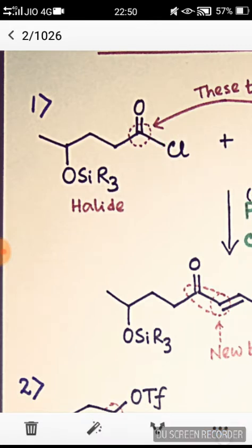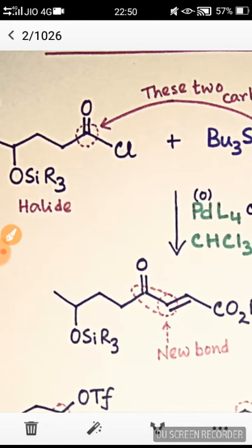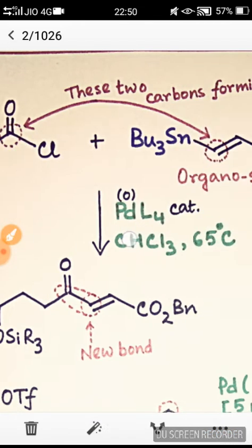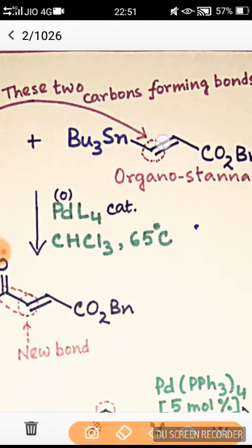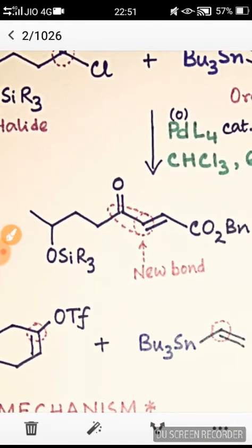This reacts with the organotin compound. We see that here these two carbon atoms, this carbonyl carbon atom and this carbon atom with the tin atom, that is this vinyl carbon, is joined together to form new carbon-carbon bonds, which is this compound.